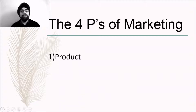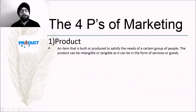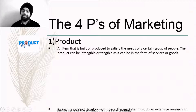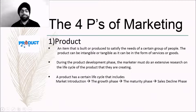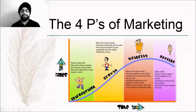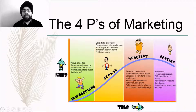Moving on to Product — a product can be any item that is built or produced to satisfy the need of a person or a group of persons. For any product, there is a certain life cycle involved, for which a marketer should do exclusive research before its launch. The Product Life Cycle mainly consists of 4 important stages: the Market Introduction Phase, the Growth Phase, the Maturity Phase, and the Sales Decline Phase. In the Market Introduction Phase, your product is newly launched into the market, and people might not be aware of it. Hence, it is very important to make people aware of the product by doing an informative campaigning exercise.